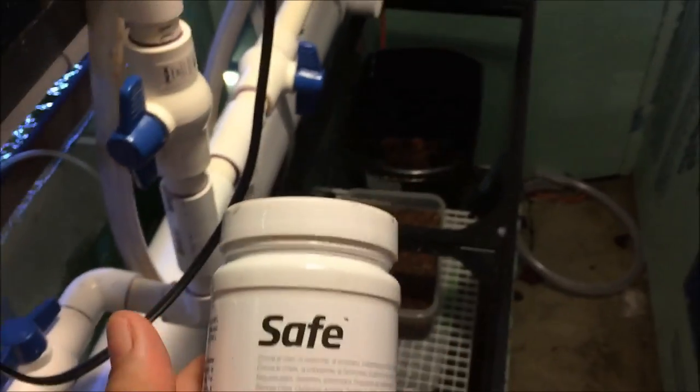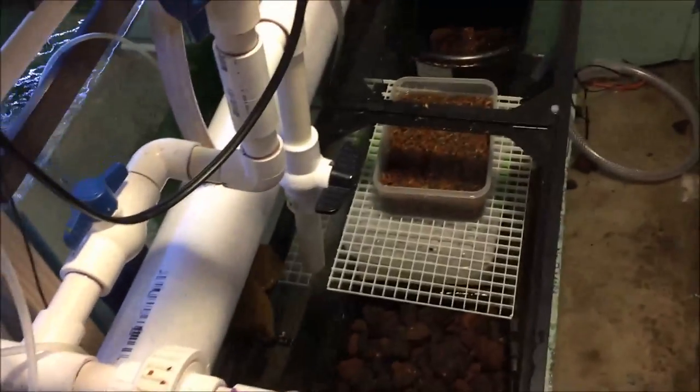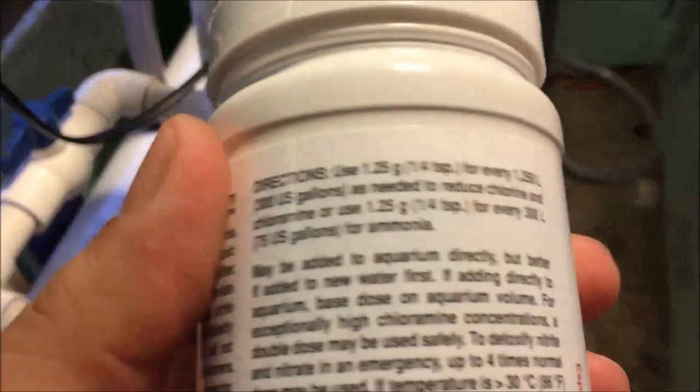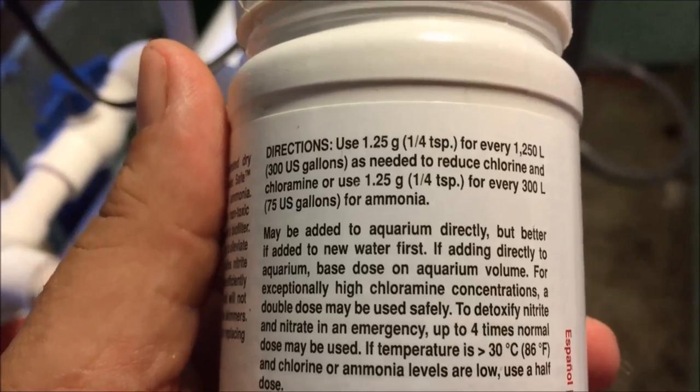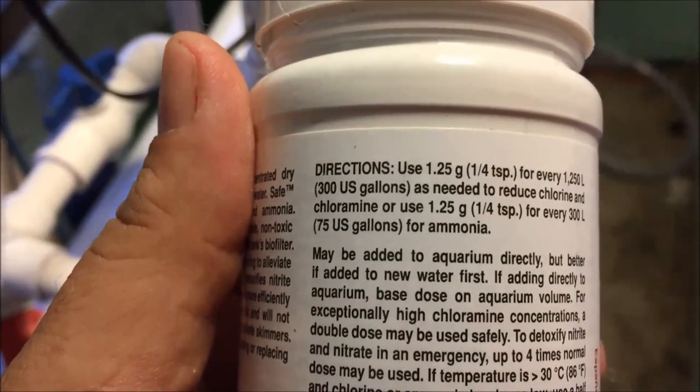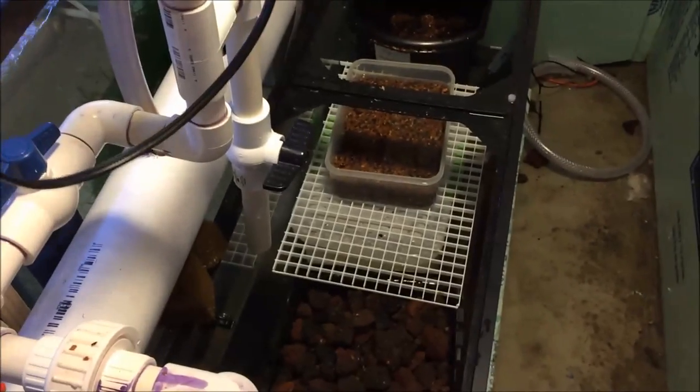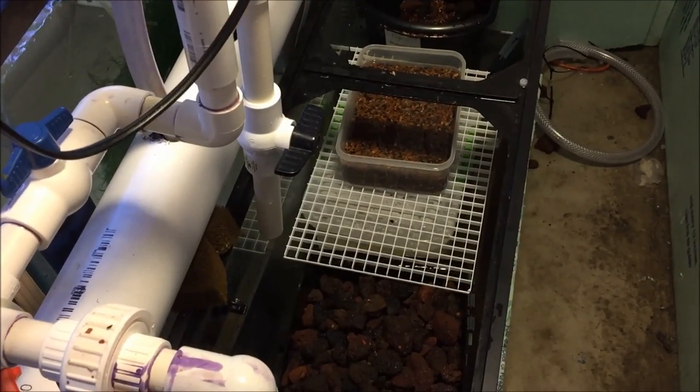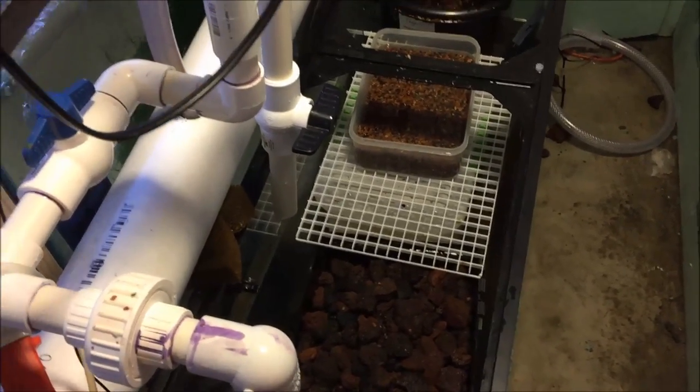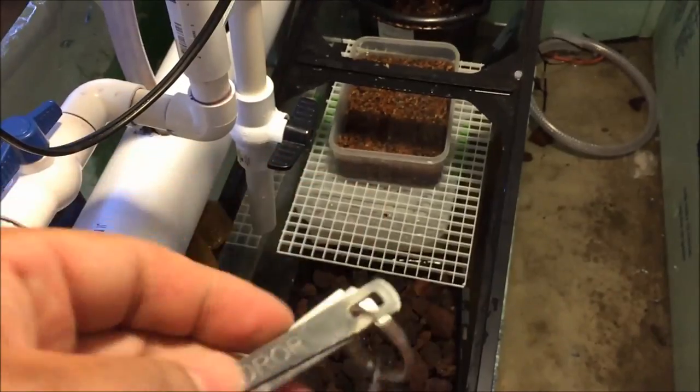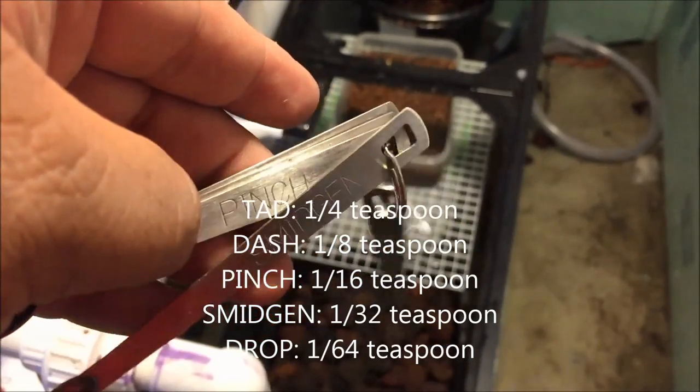Doesn't have anything for slime coat, I'm not sure Prime does either. But here's the great thing about this: 1.25 grams, a quarter teaspoon for every 300 gallons. A quarter teaspoon, if you're not familiar with how big a quarter teaspoon is, I had to buy special measuring spoons.